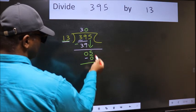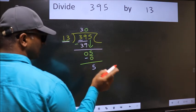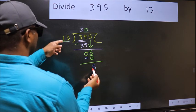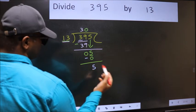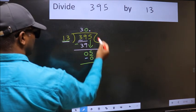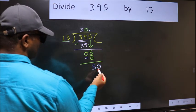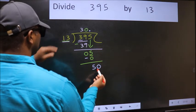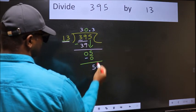Over here, we did not bring any number down, and 5 is smaller than 13. So now we can put the decimal and take 0, making it 50. A number close to 50 in the 13 table is 13 times 3, which is 39.